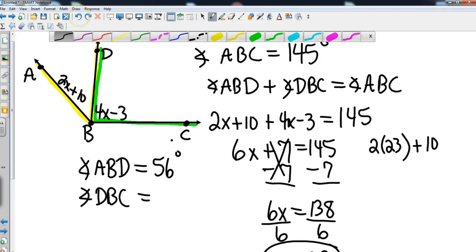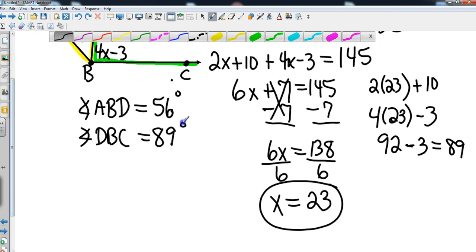So that's going to be 4 times 23 minus 3. Okay, so that's going to give me 92 minus 3. I have a little trouble in the bottom end of the board here. That's going to give me 89 degrees. So if I took 89 degrees and I added it to 56 degrees, then I should end up with 145 degrees, which I do, so that works out.